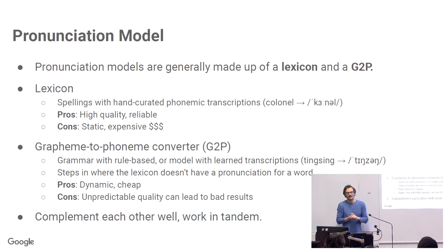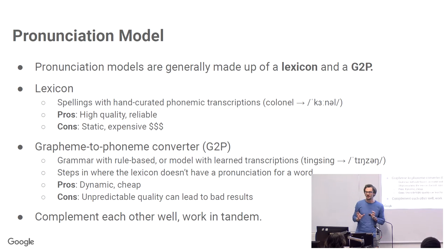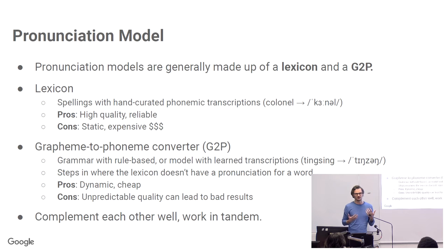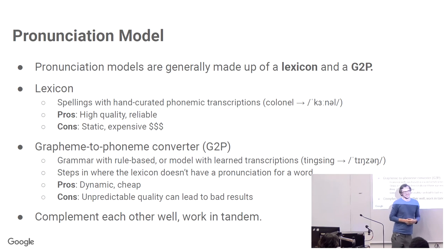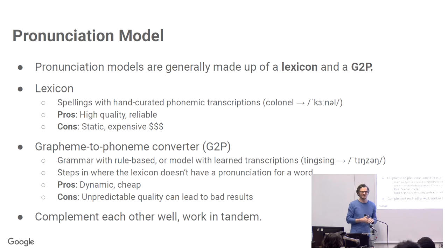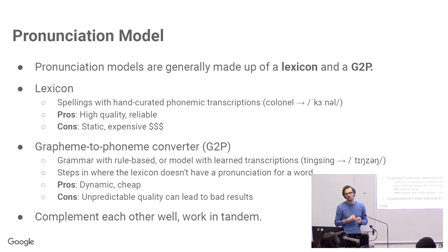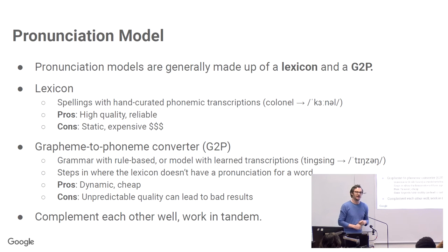The pronunciation model is generally made up of two components: a lexicon and a grapheme-to-phoneme model, or G2P. The lexicon is very high quality, hand-curated phonemic transcriptions of spelled words in the language, made by linguistic experts trained in phonemic transcription. They produce really good quality transcriptions for words like 'colonel', which is pronounced 'kernel' — you wouldn't guess it from the spelling. The pros of a lexicon are that it's very high quality and reliable. The cons are that it's static — new words, neologisms, slang, and non-standard words are not usually included, and it's extremely expensive to produce.